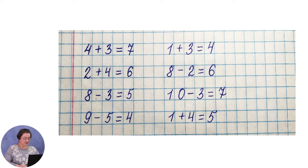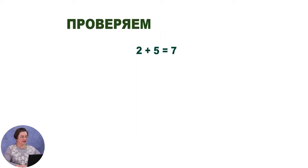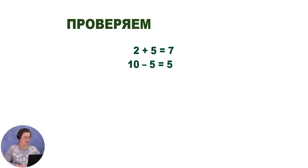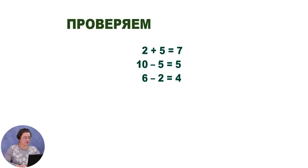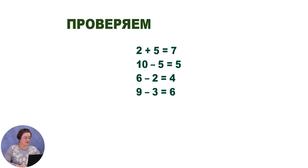От верхнего примера этого столбика отступаем вправо 3 клетки и строим третий столбик. Его вы решаете самостоятельно. Проверяем: 2 плюс 5 равно 7; 10 минус 5 — это 5; 6 минус 2 — это 4; 9 минус 3 — это 6.